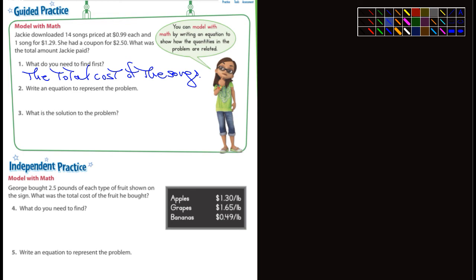So again, we could use C. So C equals, first off, she bought 14 songs for 99 cents. So C equals, we could put that one in parentheses, 14 times .99.